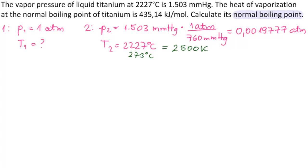We have one more piece of information: the heat of vaporization at the normal boiling point of titanium. Delta HV is 435 kilojoules, so we'll convert to joules right away—435,140 joules per mole.